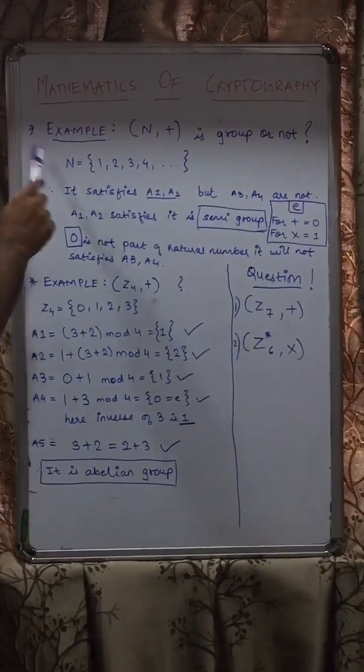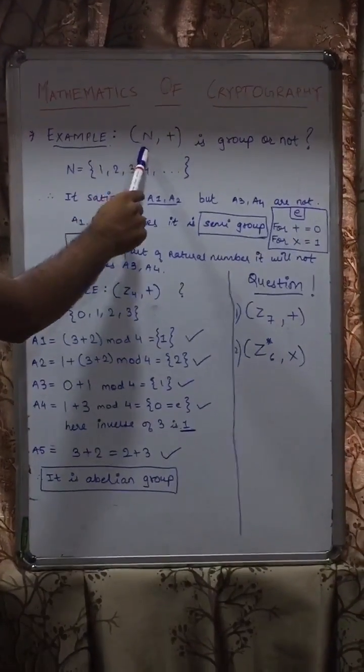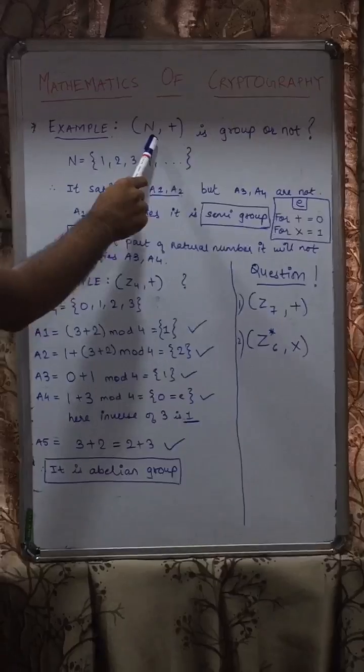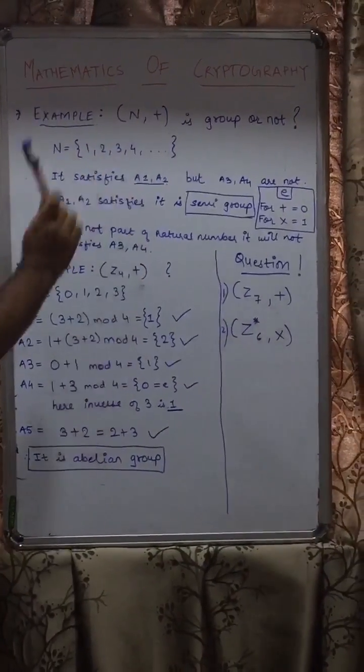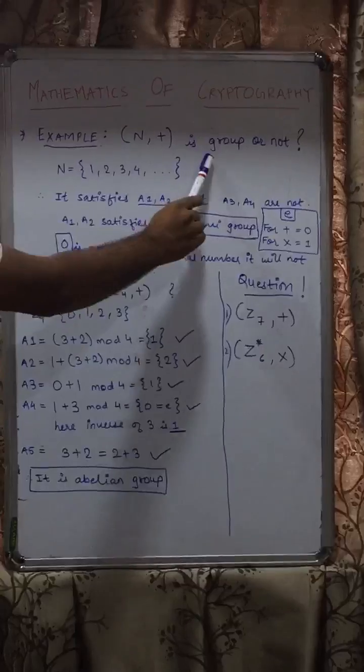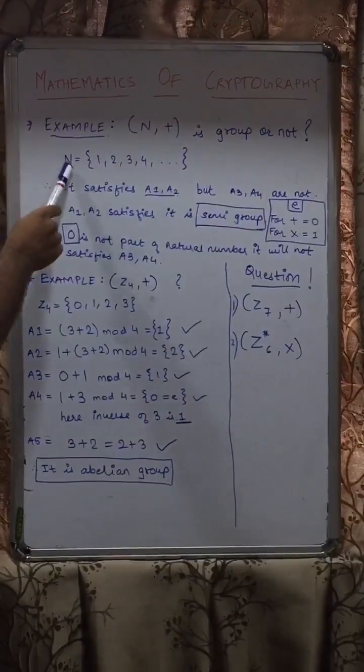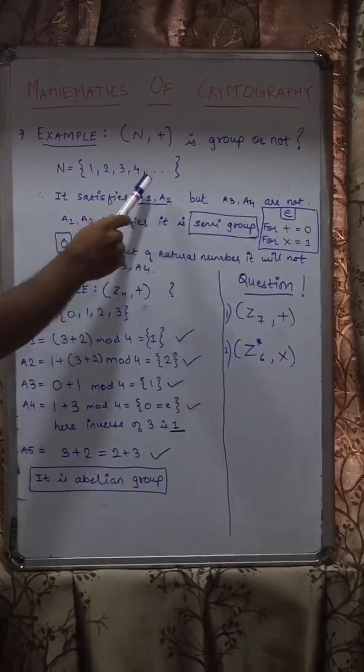So now let us solve an example. We have a group which represents N as the set of natural numbers and operator as addition. So we have to find out, is this a group or not? The N set consists of 1, 2, 3, 4 and so on.